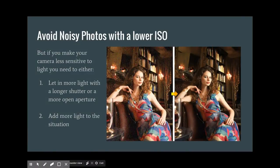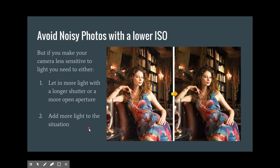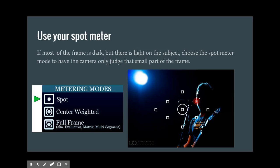If your problem is noisy photos, lower your ISO. However, if you lower your ISO your camera is less sensitive to light, so you need to get more light into the camera some other way — either a longer shutter speed, a more open aperture, or by adding more light to the situation.